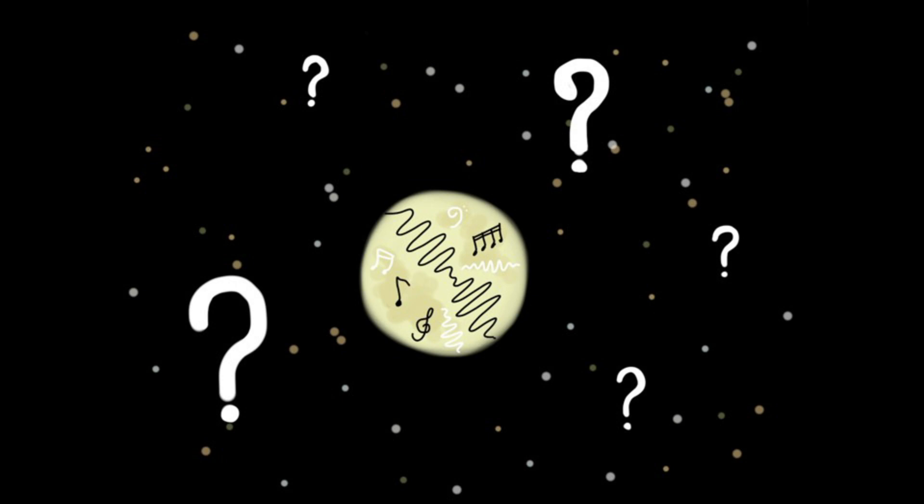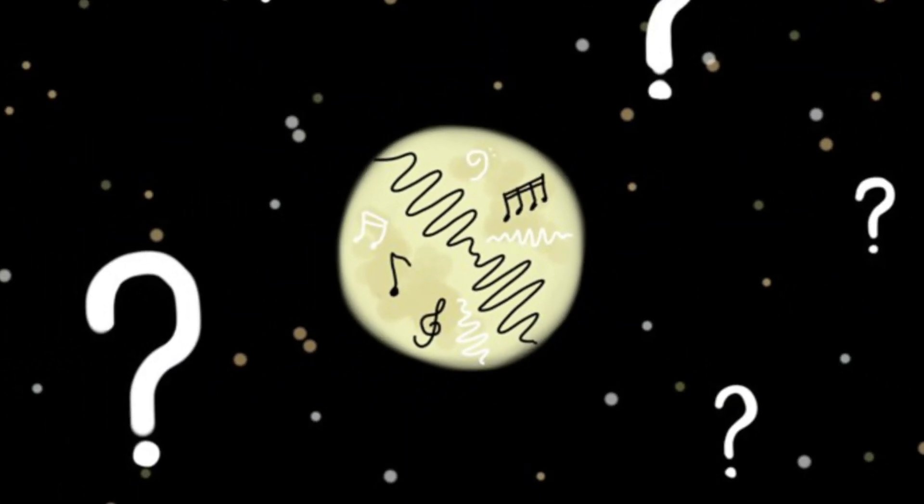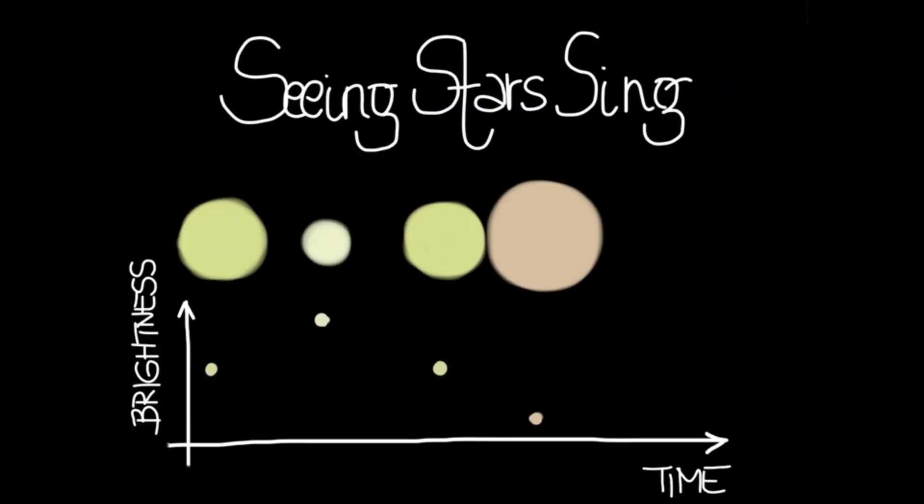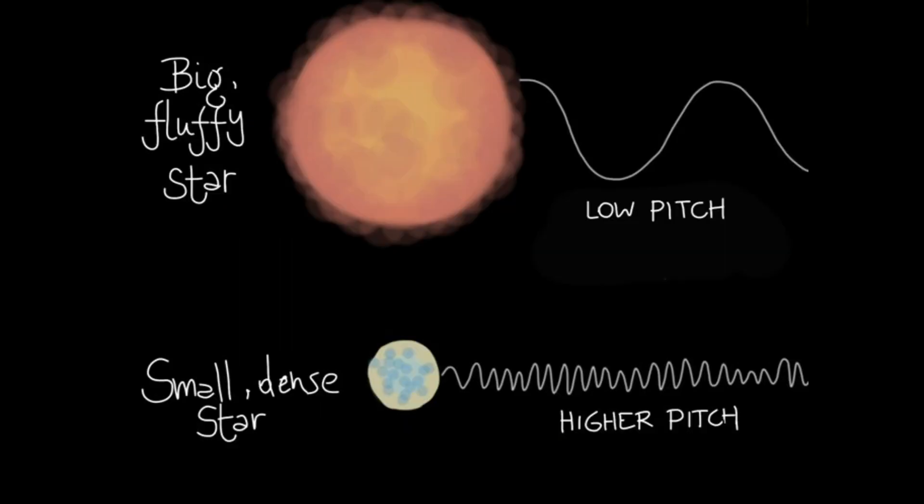We cannot hear their sounds, but these sounds affect the light that the stars emit. We can record these brightness variations of the stars and thus figure out the sound waves ringing through the stars. And when we speed up the vibrations, they become audible to the human ear and we can enjoy the characteristic sound, or the timbre, of each star.